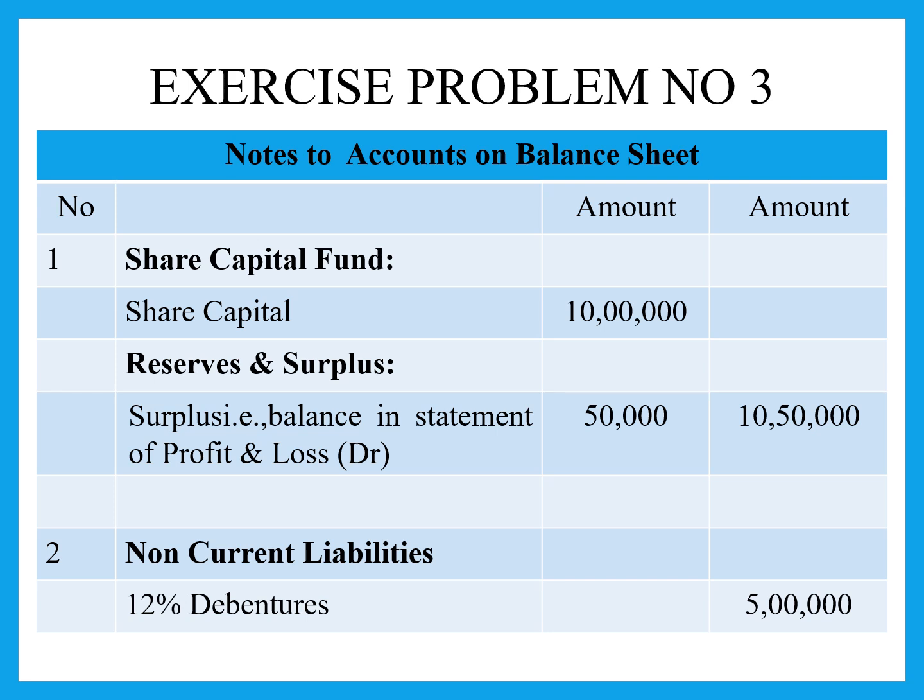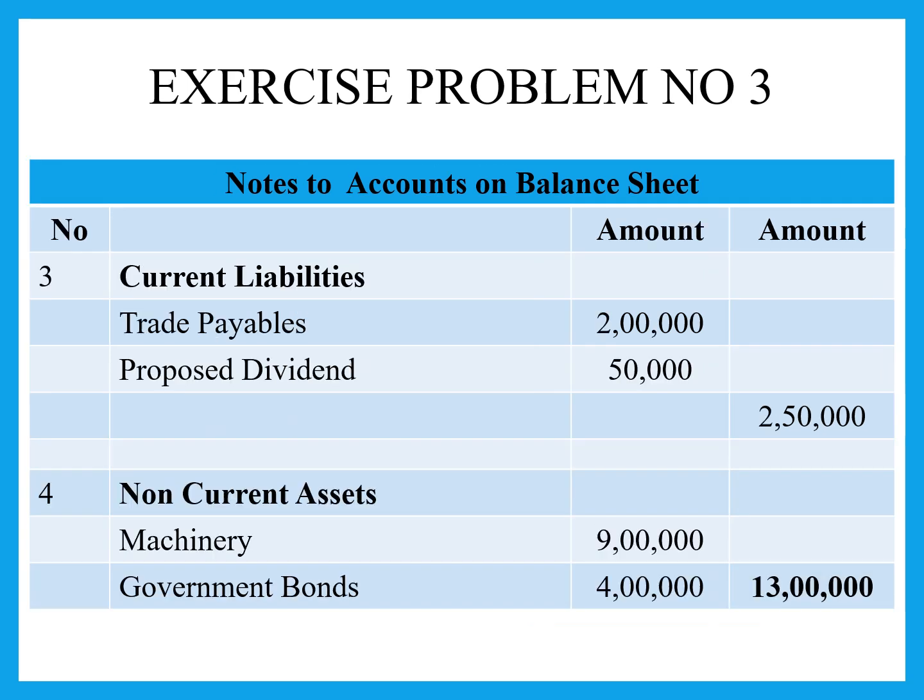And then, non-current liabilities. Under non-current liabilities, we have a 12% debenture, that is 5 lakh rupees. So non-current liabilities total is 5 lakh rupees.